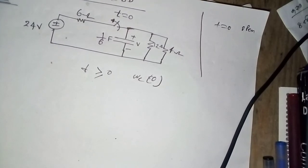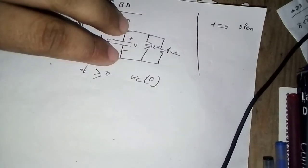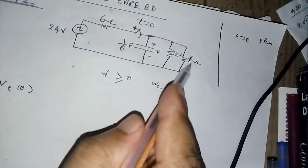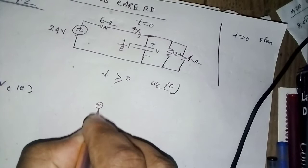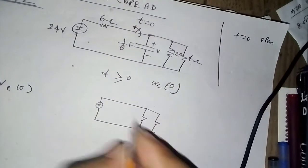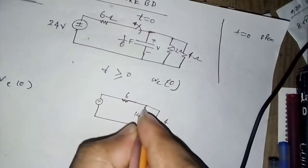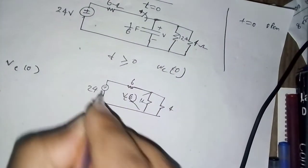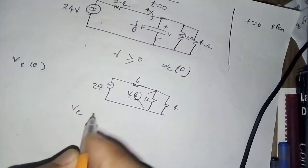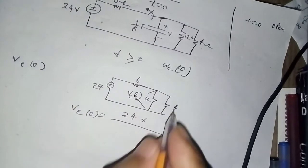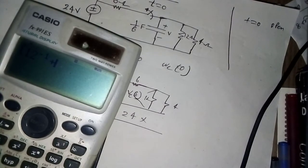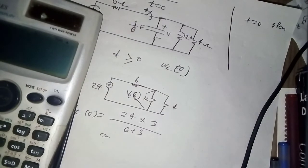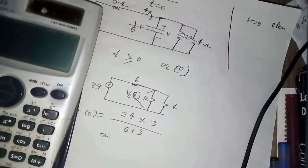For the initial condition at t equal to 0 minus, we find Vc(0). The calculation is 24 times 3 divided by 6 plus 3, which equals 8 volts.